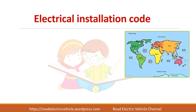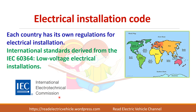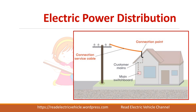The electrical installation code differs from one country to another. The majority of countries follow the International Electro-Technical Commission (IEC) standards, while America follows the National Electrical Code. Some countries derive standards from these and develop their own set of regulations. We all get the power supply from the utility pole through a connection point which comes to the main switchboard.